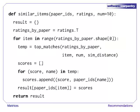In code, we assign the transposed data matrix to the variable ratings_by_paper. Next, we compute the top matches for each paper. Finally, we clean up the output by assigning paper names to the data indices using the paper_IDs variable.